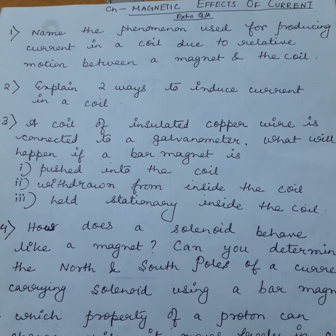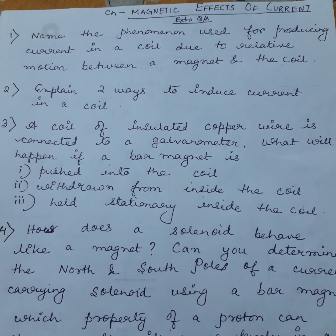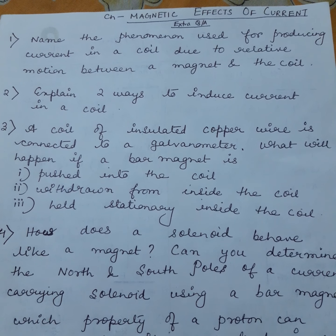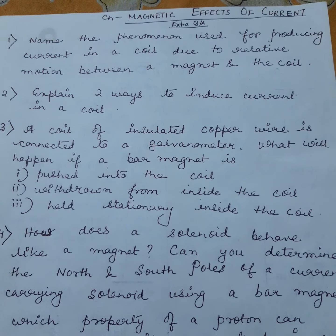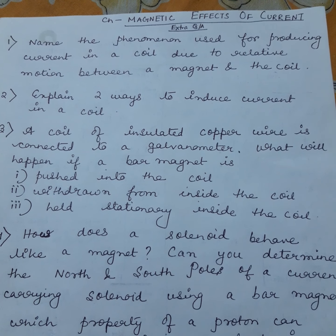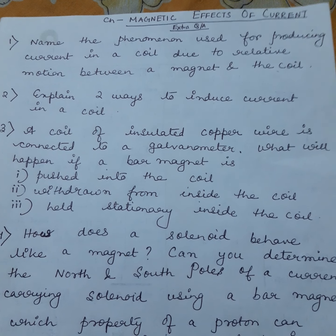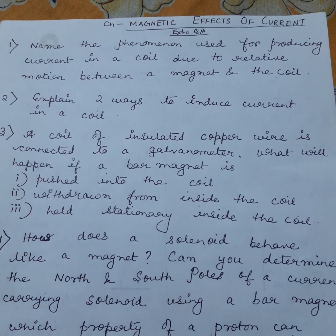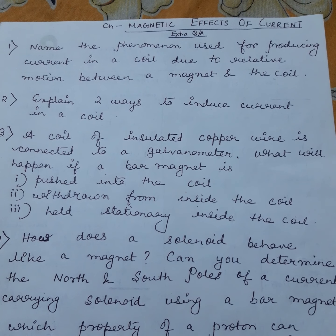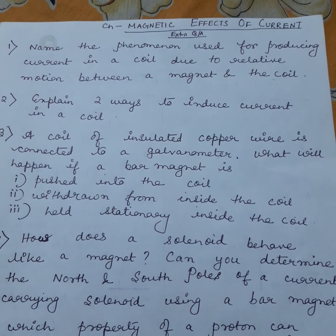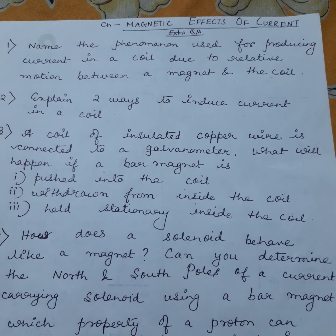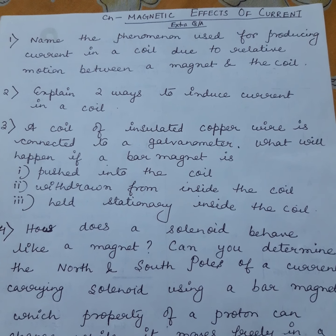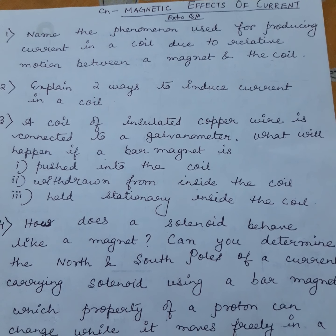Question one: Name the phenomena used for producing current in a coil due to relative motion between a magnet and the coil. This is very easy. The answer is electromagnetic induction, because it is the phenomenon by which we can produce or induce current in the coil by the relative motion between the magnet and the coil.